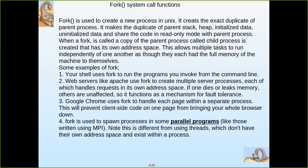Before that we will see the fork system call. Fork is a system call used in Unix to create a new process. It duplicates the parent process — it creates an exact duplicate. All memory, array declarations, and variable declarations used in the parent process will be duplicated, but the address space is different. The parent has a different address space and the child has a different address space.